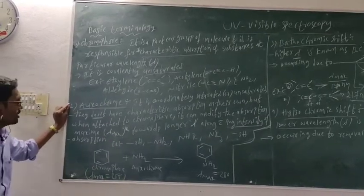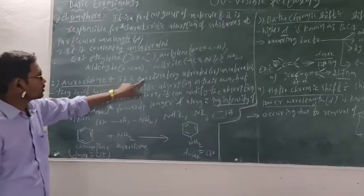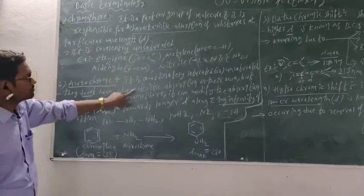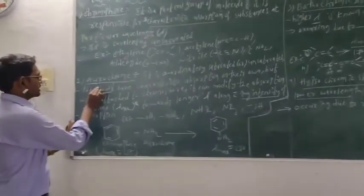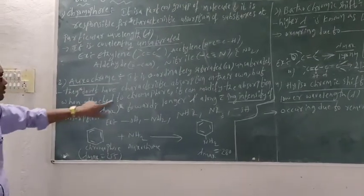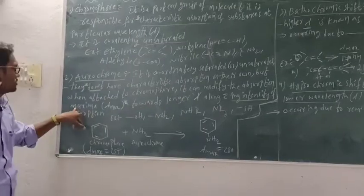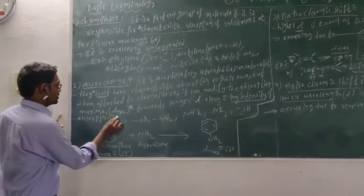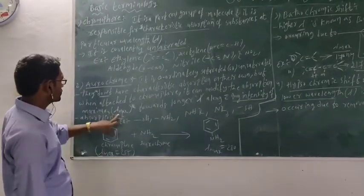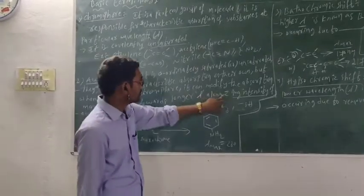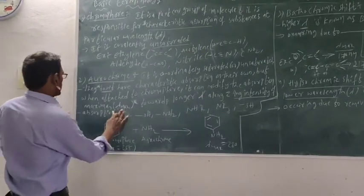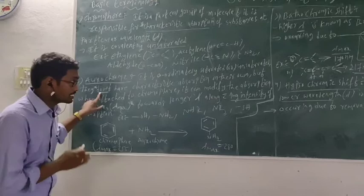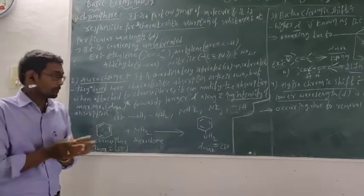Coming to the second term: auxochrome. Auxochrome is a group that is saturated or unsaturated. They do not have characteristic absorption on their own. But when attached to a chromophore, it can modify the absorption maximum — the lambda max. It can modify the absorption maximum of the chromophore. Auxochrome does not possess any absorption property like chromophore.